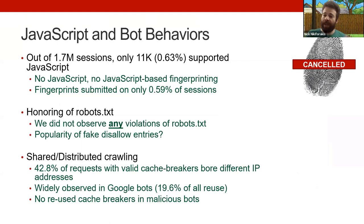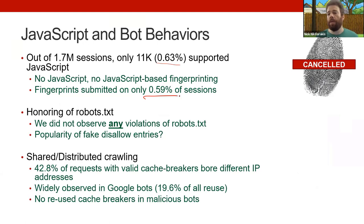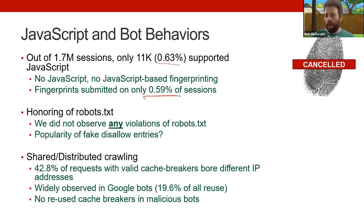Some things we expected didn't turn out as anticipated. We thought we'd get rich JavaScript fingerprinting data, but only 0.63% of sessions on our honey sites supported JavaScript, and fewer than that yielded a full fingerprint. These tools are simply not running JavaScript. The upside: you could add JavaScript as a requirement on your website — if a client isn't running JavaScript, it cannot proceed — and you'd eliminate a large number of generic attacking bots.